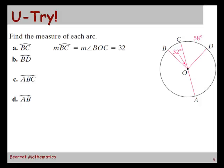We need to find the measure of arc BD. If we add BC to CD we should get BD using the arc addition postulate. So 32 plus 58 comes out to be 90.